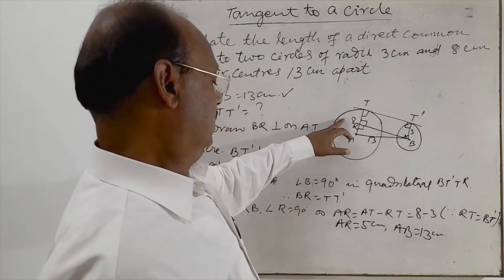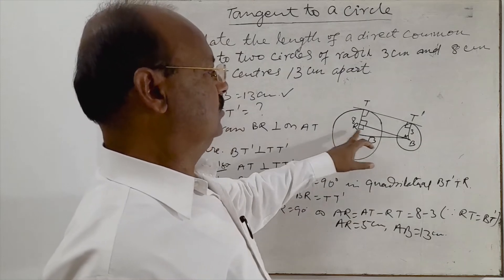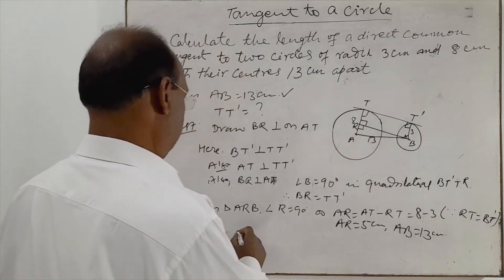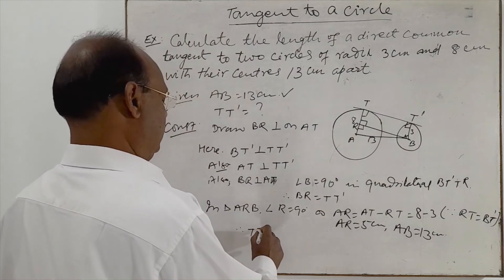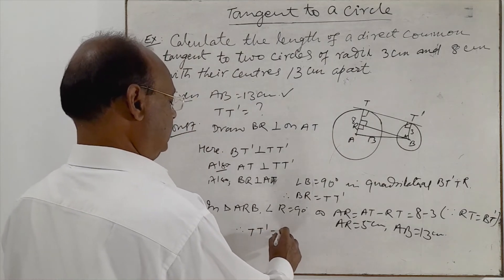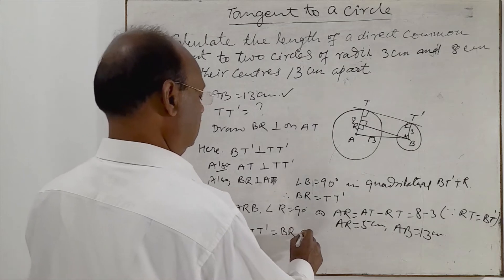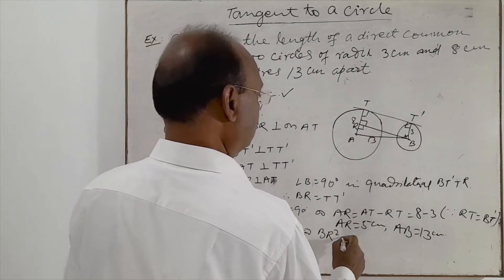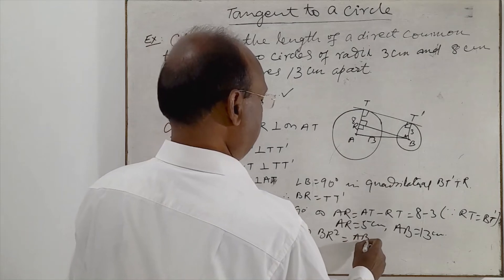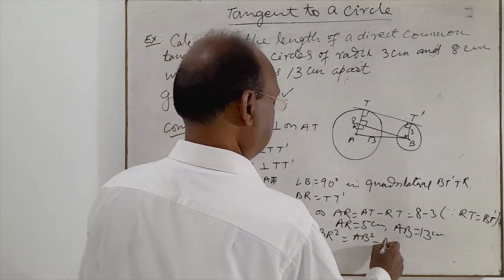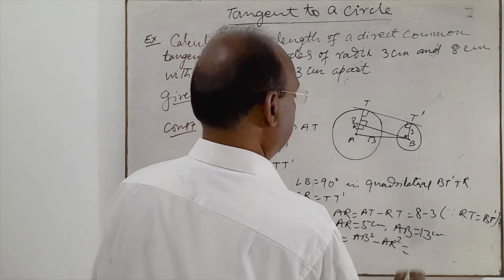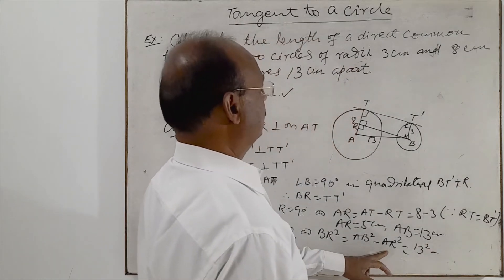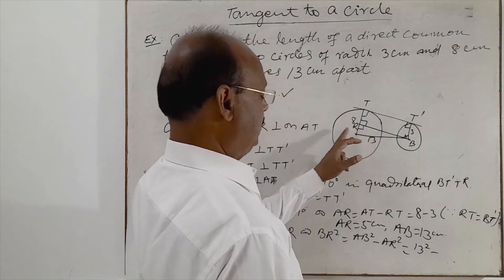So AR is 5 cm. So we can find out BR. Therefore, TT' is equal to BR. And BR squared is equal to AB squared minus AR squared.